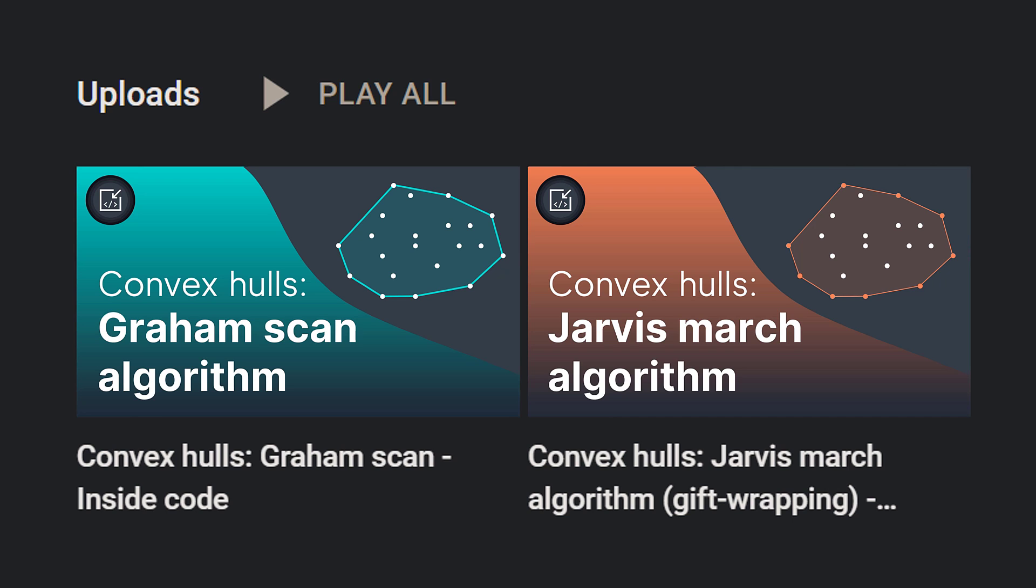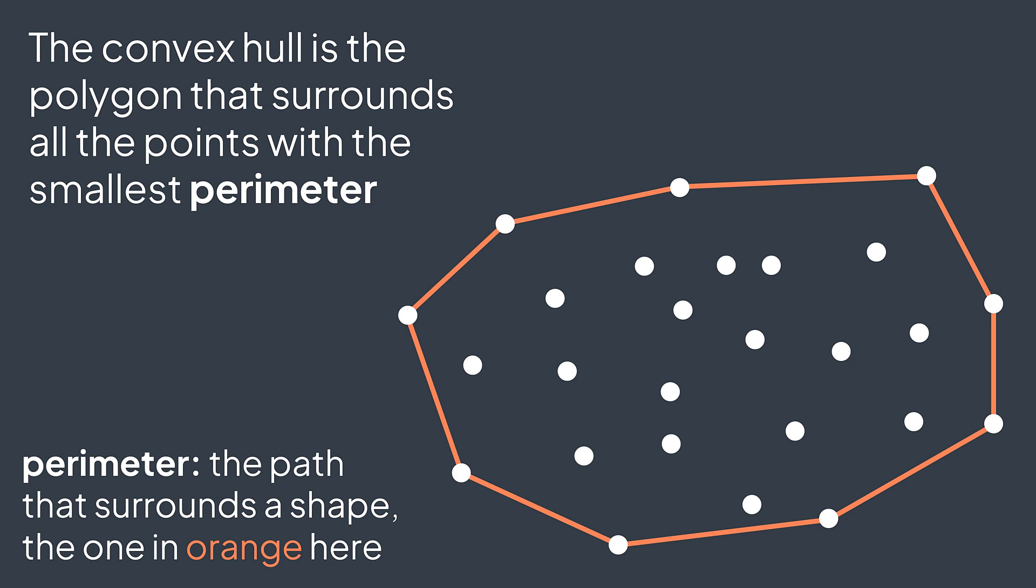First of all, we need to understand the property of convex hulls. That property says that the convex hull is the polygon that surrounds all the points with the smallest perimeter.